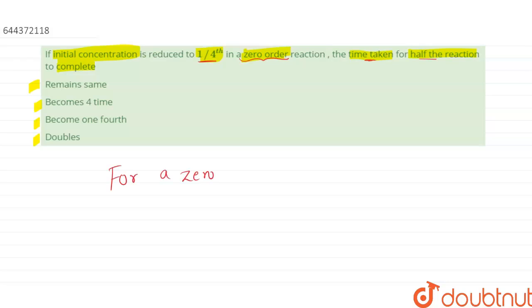So for a zero order reaction, half life T half is given by the initial concentration A naught by 2k, that is rate constant.